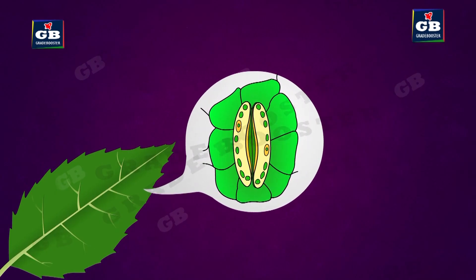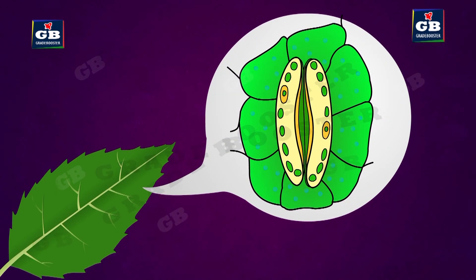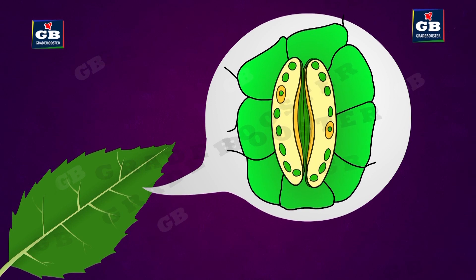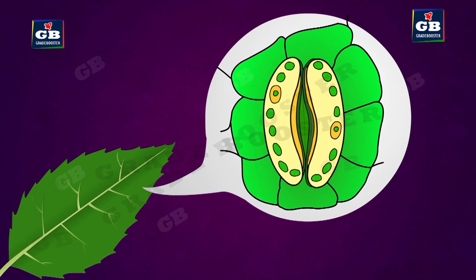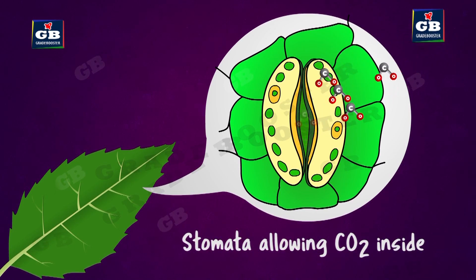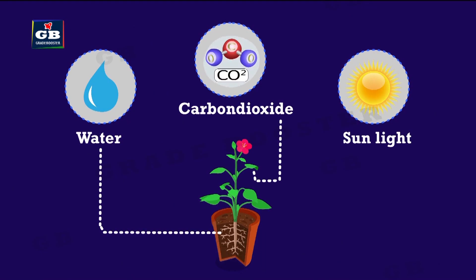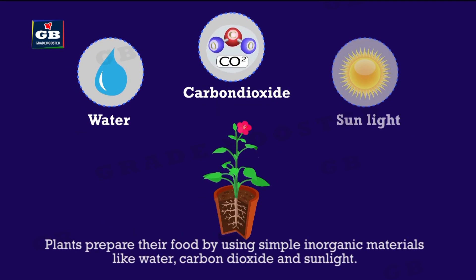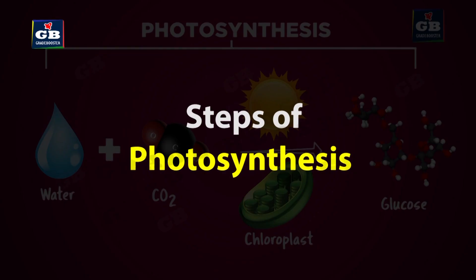Now let us see how plants get their raw materials for photosynthesis. Plants get carbon dioxide through stomata, which are the tiny pores present on the underside of the leaf. Plants get water from the soil through roots. Sunlight enters the chloroplast through the upper surface of the leaf.